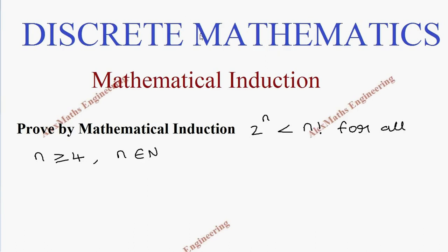Hi students, this is Alex. In this video we are going to prove by mathematical induction that 2^n is less than n factorial for all n greater than or equal to 4, and n belongs to natural numbers.